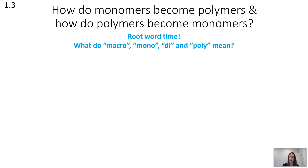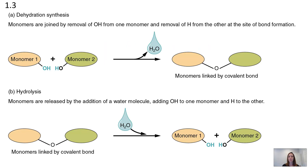Regardless of what macromolecule we're talking about, it's the same process. There are two processes you need to be familiar with — one in which the monomers are joined together, and one in which they are split apart. The first, in which monomers are built together, is called dehydration synthesis. Dehydration means that you take water out — it's like being dehydrated. Synthesis means that things are being built together, coming together. The monomers are combined when we take water out.